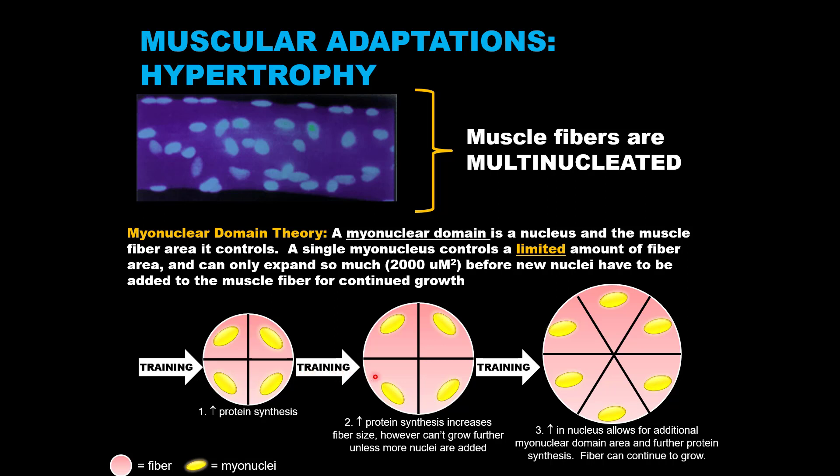We know from prior slides that as an adaptation to this repeated stress, there will be elevated myofibrillar protein synthesis within the fiber, and this will cause the fiber to hypertrophy or expand. If you are continuously training and the muscle fibers want to continue to adapt by synthesizing more myofibrillar proteins, at this point each of the four nuclei cannot control any further area of the fiber, meaning each of the myonuclear domains has reached its capacity.